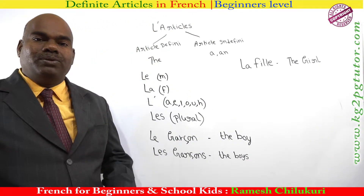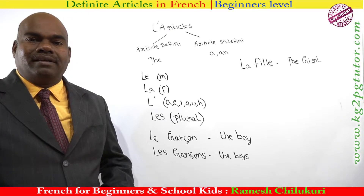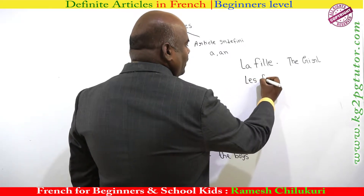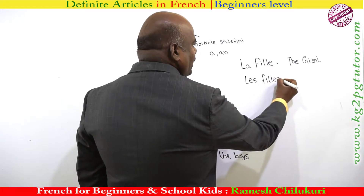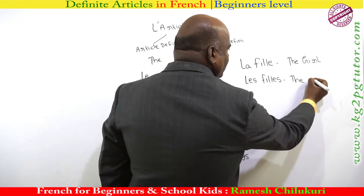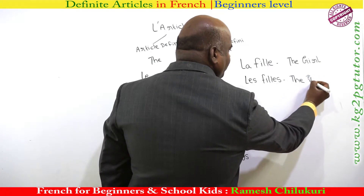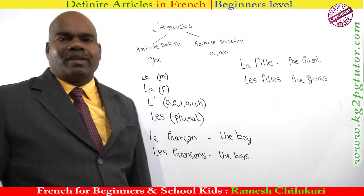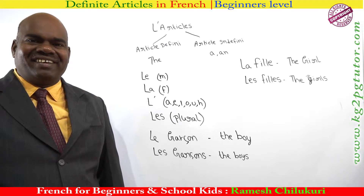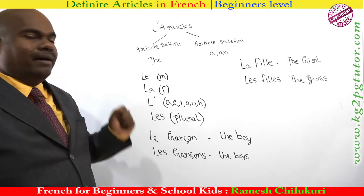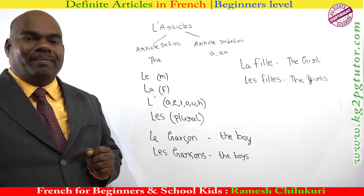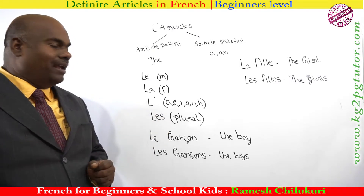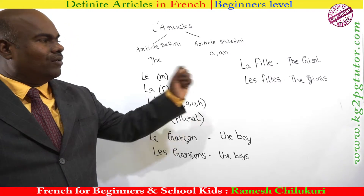And when you want to say 'the girls', you use LES. LES Filles means 'the girls'. So to summarize: LE for masculine, LA for feminine, L' for words beginning with vowels, and LES for plural. This is how you write and use the definite articles in French.